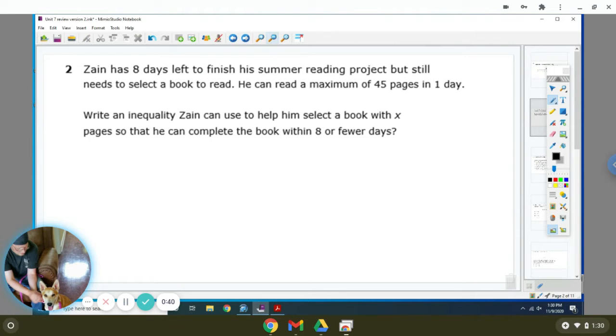Zane has 8 days left to finish his summer reading project but still needs to select a book to read. He can read a maximum of 45 pages a day. Writing a quality that can help you select a book with x pages so you can complete a book within 8 days or fewer. So it wants to be 8 days or less, and it has a maximum of 45 pages a day.